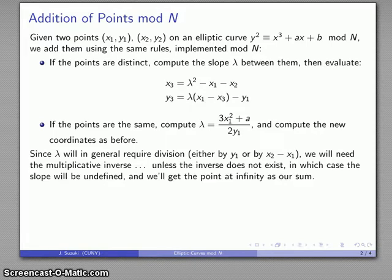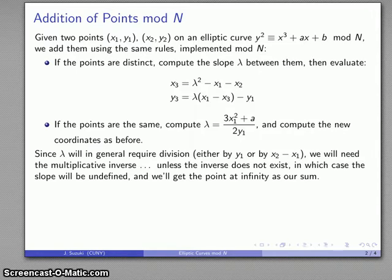So what this means is two things. First of all, if the inverse doesn't exist, then our slope is undefined, and our point at infinity is going to be the sum. Now while this is a reasonable thing to do, we actually want to avoid that because that point at infinity sometimes causes complications.